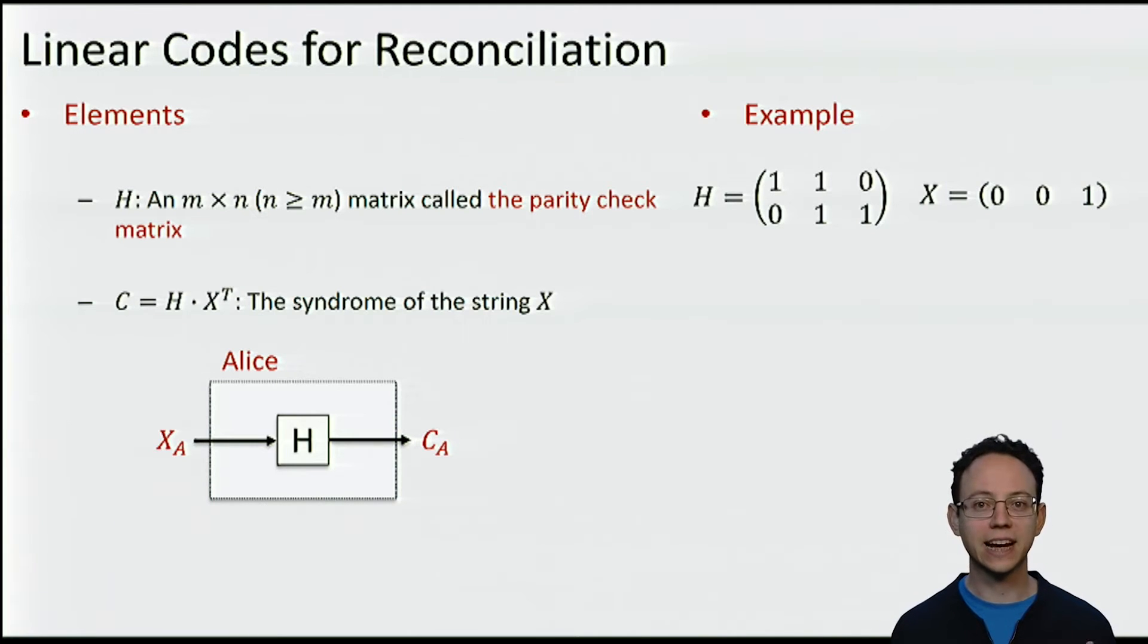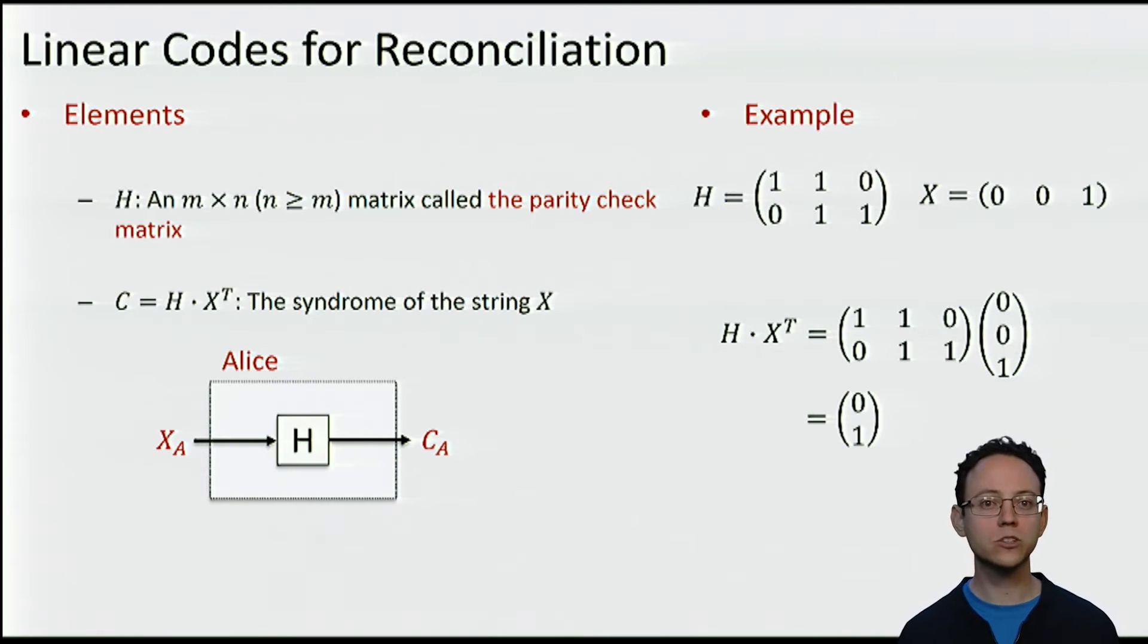Let us make this idea clear with an example. Let us assume that we have the string of length 3, 001, and the parity check matrix is the one given here. Then we can easily compute the syndrome of x. We multiply H with x transpose, and we can easily verify that we obtain the string 01. What this means is that if x were the string of Alice, the message that Alice would send to Bob for reconciliation would be the syndrome of x, which as we calculated is 01.